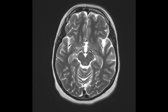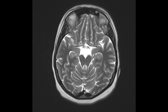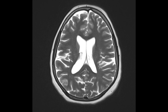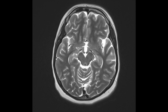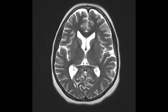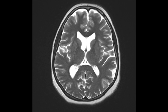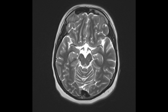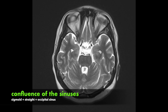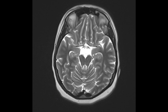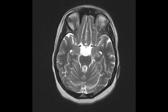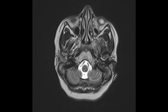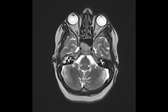At this level you can see the confluence of the sinuses. The superior sagittal sinus runs down here and, by way of the internal cerebral veins and the straight sinus, forms the confluence of sinuses. That goes on to form the transverse sinuses on both sides — you can see them heading out laterally — and then the sigmoid sinus, eventually forming the internal jugular vein.